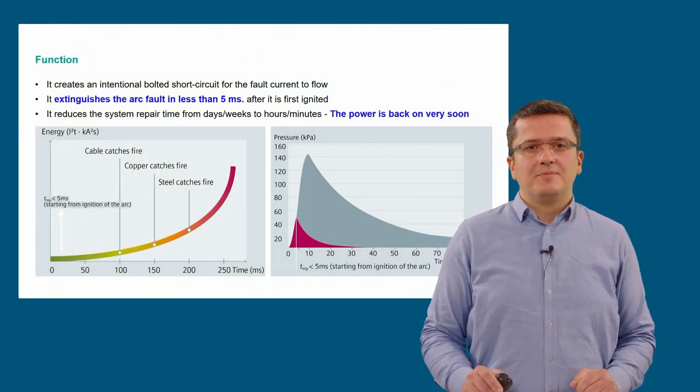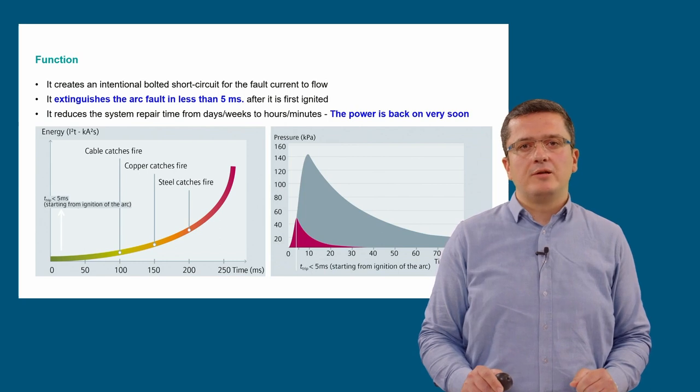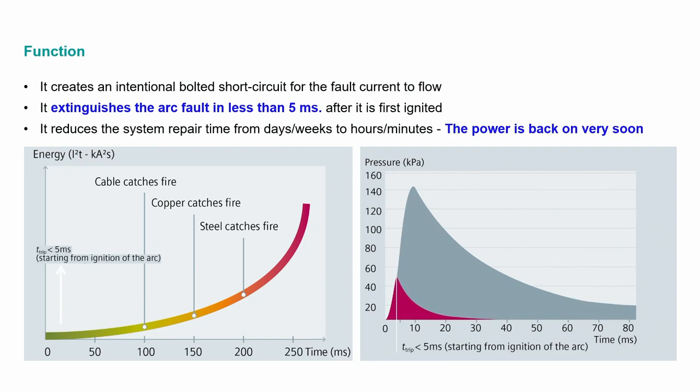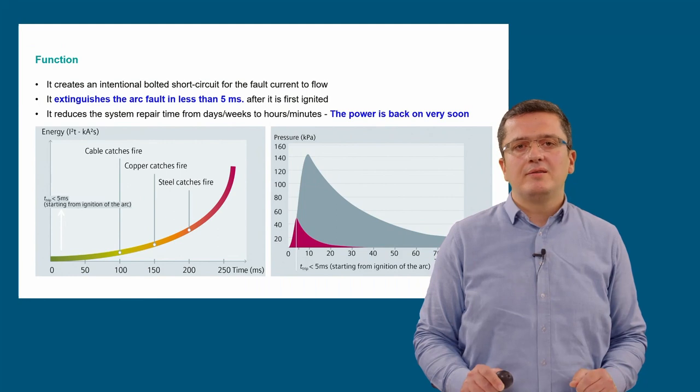So, SIQuench, in the case of an internal arc, by consciously closing the live bus bar over the ground bar of the switchgear, creates a controlled, bolted short circuit path for the fault current to flow. This is the main current path of the switchgear and is actually the intended current path for such fault conditions. And it does that within five milliseconds after the arc is first ignited. By doing so, it prevents the damaging effects of an arcing fault and allows to re-energize the switchgear in a very short time, avoiding time-consuming and costly system repair activities.